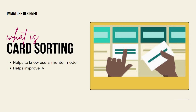So what exactly is card sorting? Card sorting helps to understand the user's mental model — how the user is thinking when they are on your website or application, and where the user believes they will find something they are searching for. Card sorting also helps in improving the information architecture of an existing website or a new website or application that is to be built.